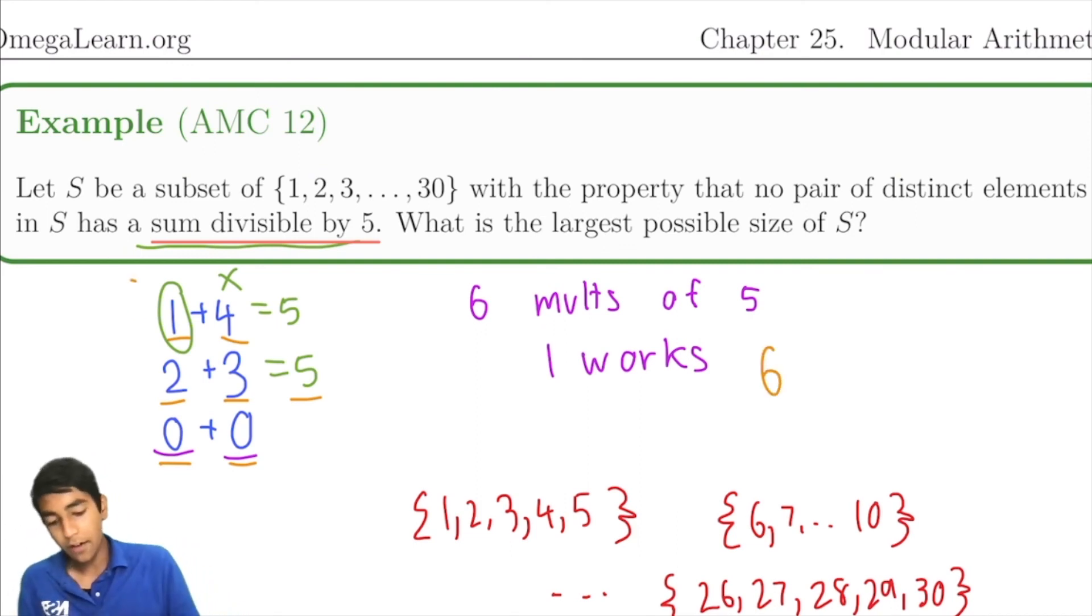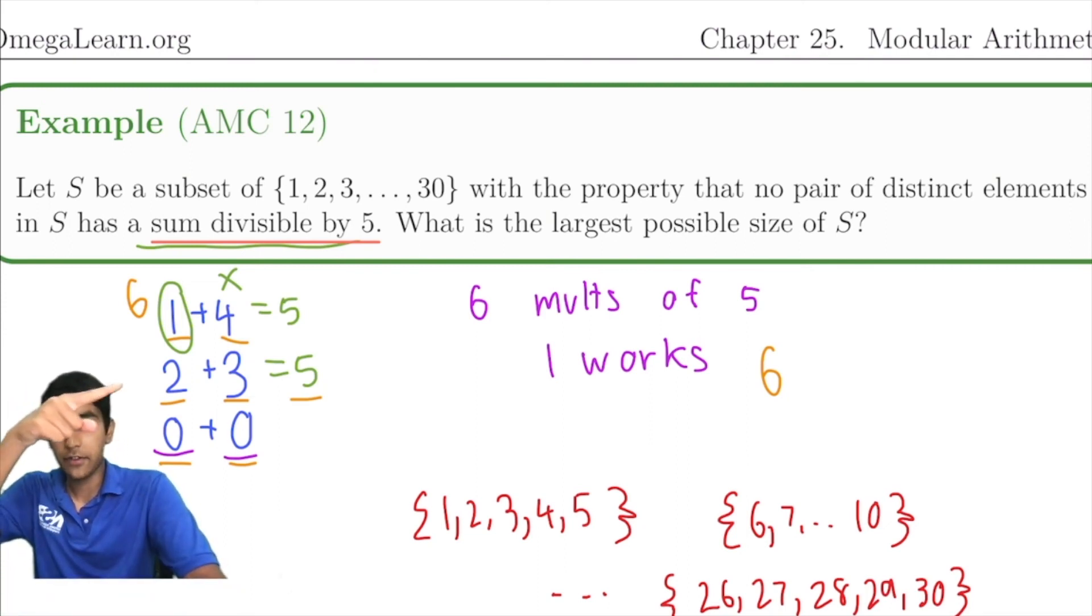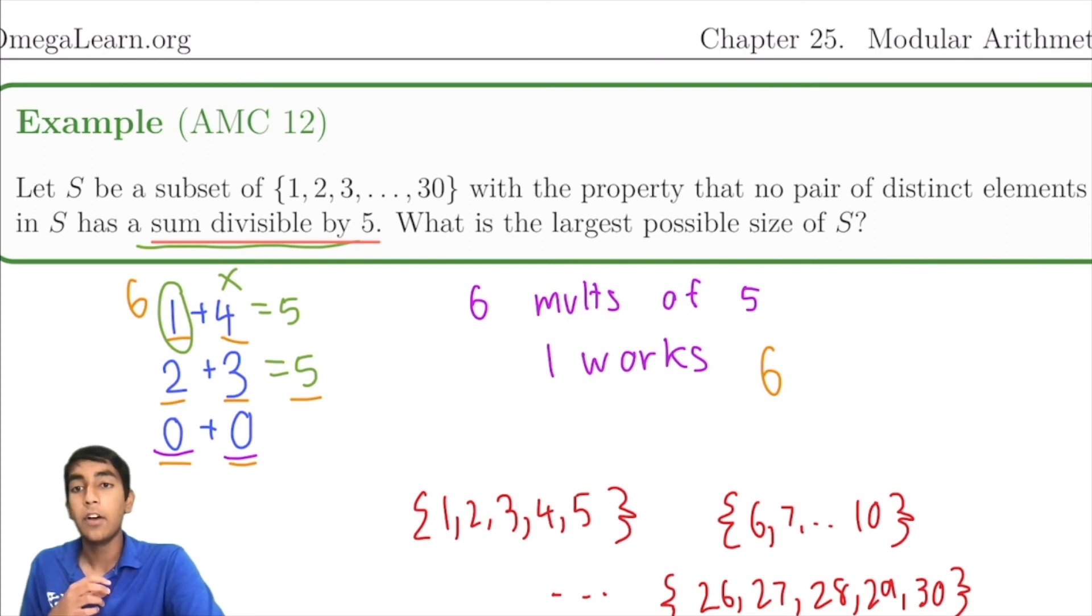But we can't have any numbers that leave a remainder of 4 when divided by 5. So now we can actually reverse this too. We could have no numbers leaving a remainder of 1 and all 6 of the numbers that leave a remainder of 4.